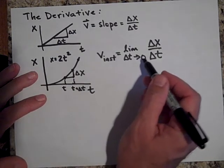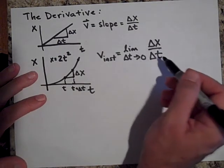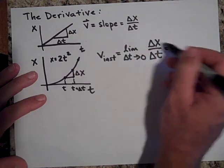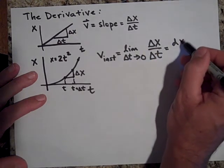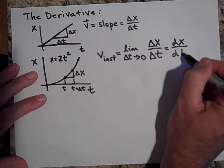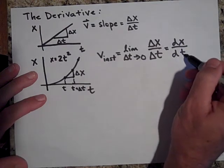Now, what we can do is we can shorten this. This is a lot to write. And this whole thing can be shortened to just say dx dt. It's the derivative of x with respect to time.